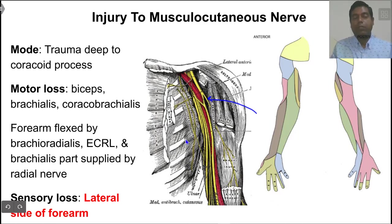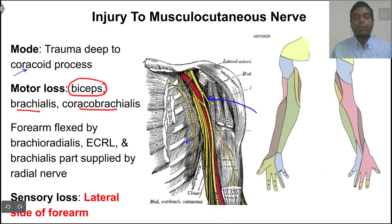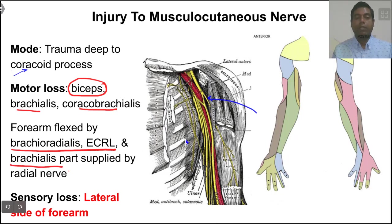The musculocutaneous nerve is usually present deep in the axilla, so there are fewer chances of injury. The mode of injury can be trauma deep to the coracoid process. The muscles supplied — biceps, brachialis, and coracobrachialis — will lose their nerve supply. Biceps and brachialis are flexors of the elbow, so forearm flexion will become weaker but will not be lost, as brachioradialis and extensor carpi radialis longus, supplied by the radial nerve, and part of brachialis also supplied by the radial nerve, can still flex the forearm.